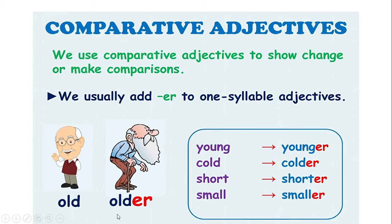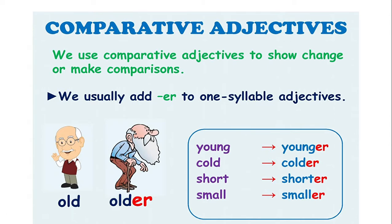Old, older. This grandfather is old. But this grandfather looks older than this grandfather. So here we are making comparisons. We usually add -er when we make comparisons.